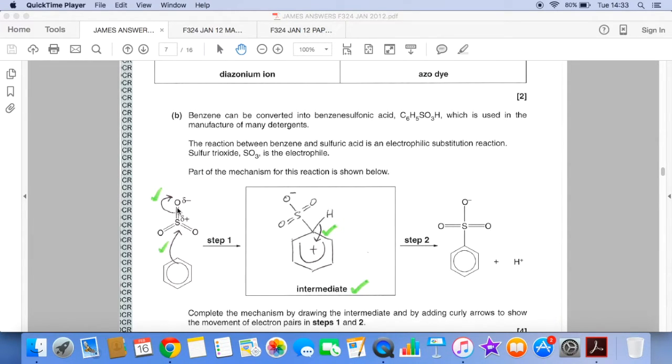so we've gone for that one. So a couple of marks there, you can see the intermediate's worth a mark, so just check you've drawn that correctly. And then we need to lose this hydrogen, so a pair of electrons from the middle of the bond back in to reform the pi electron cloud.